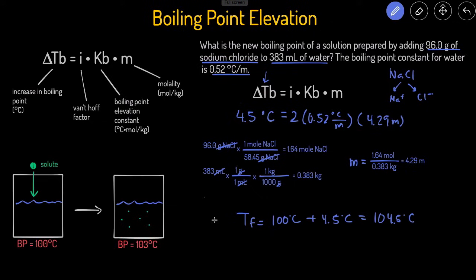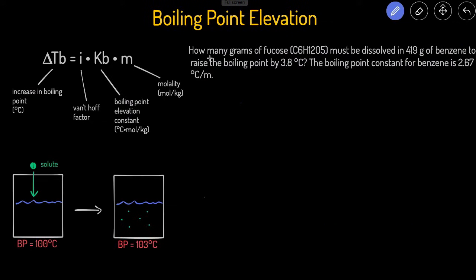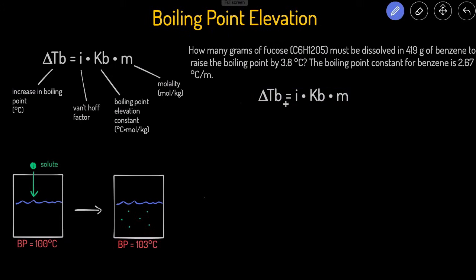Let's take a look at another problem. This next problem asks: how many grams of fructose must be dissolved in 419 grams of benzene to raise the boiling point by 3.8 degrees Celsius? The problem also gives us the boiling point elevation constant for benzene. We use the same equation, and we already know the change in boiling point temperature is 3.8 degrees Celsius.